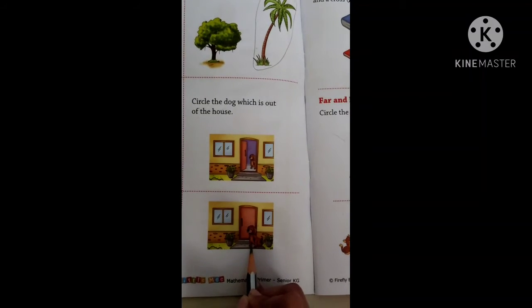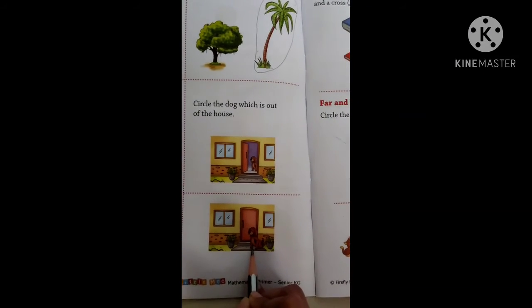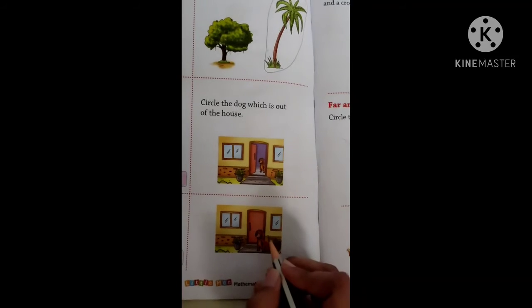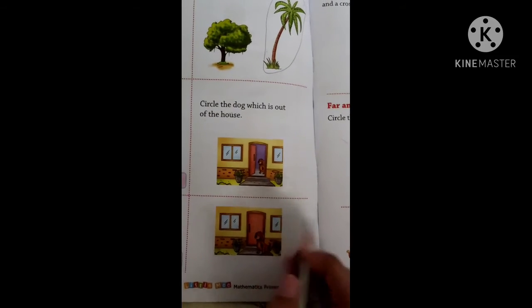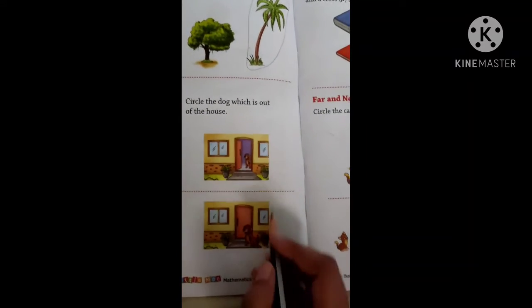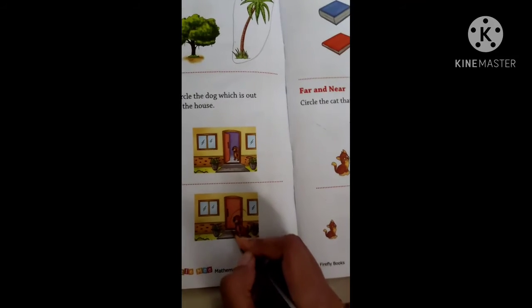What do we have to do? Circle the dog that is out of the house. We have to circle the dog where it is out. Here he is in. Here he is out. So here we are supposed to circle it.